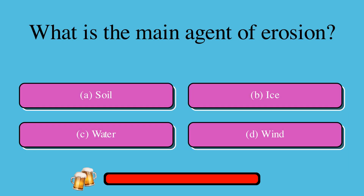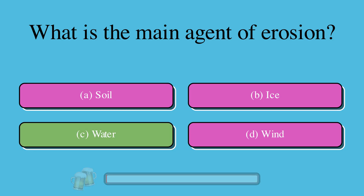What is the main agent of erosion? A. Soil, or B. Ice, or C. Water, or D. Wind? The correct answer is C. Water.